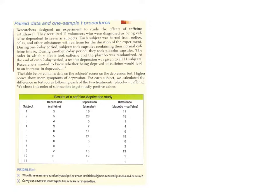Let's look at an experiment using this paired data. We've got this experiment with caffeine and whether the withdrawal of caffeine causes depression. Take a couple of minutes, pause and read the setup. Part A asks: why did researchers randomly assign the order in which subjects received the placebo and the caffeine? This ensures that anything we find that's statistically significant is actually due to the treatment — subjects can't influence results based on knowing when they're getting caffeine. It helps ensure results are actually due to the experiment.